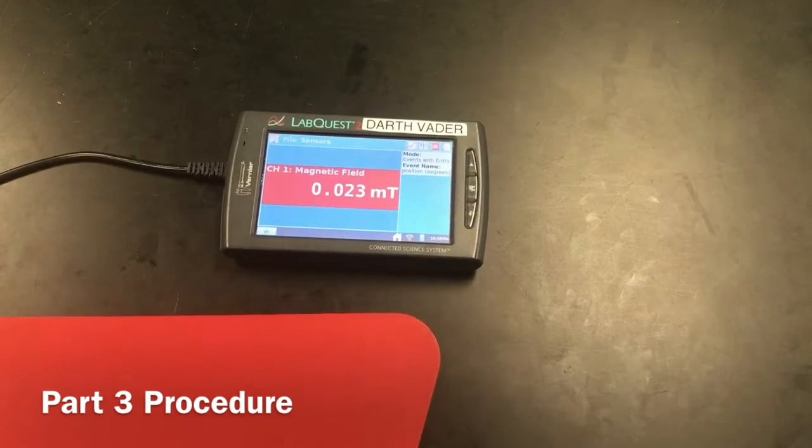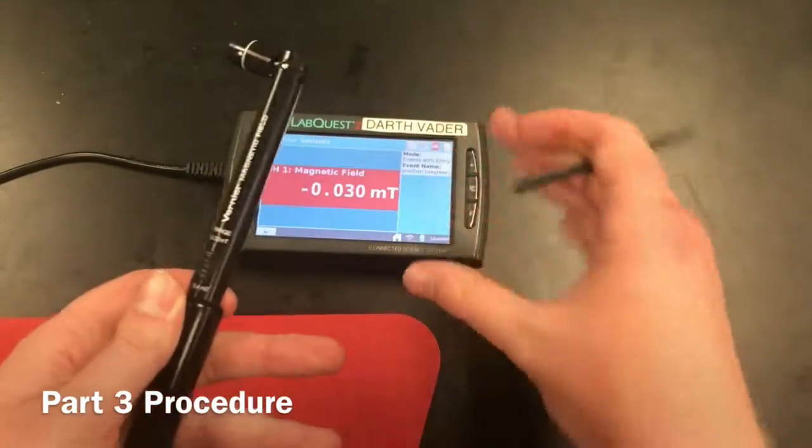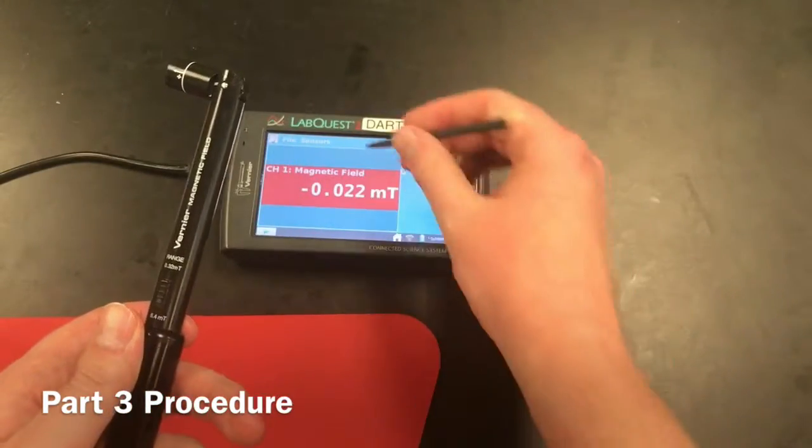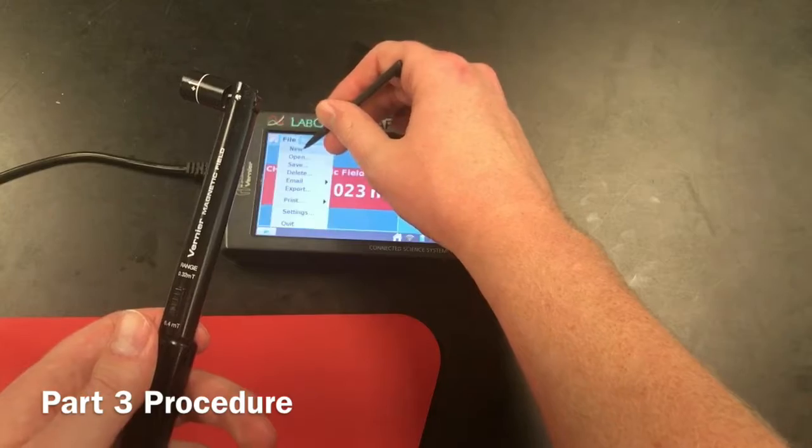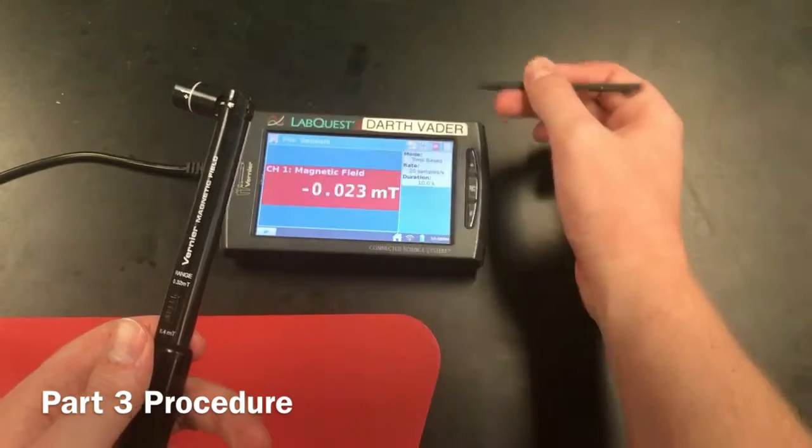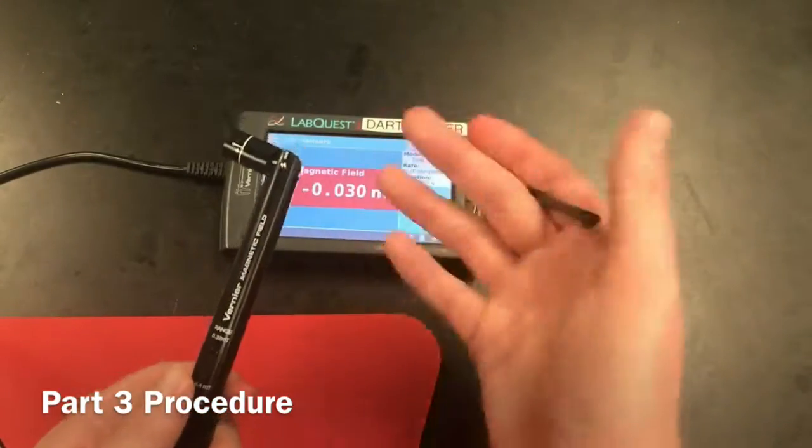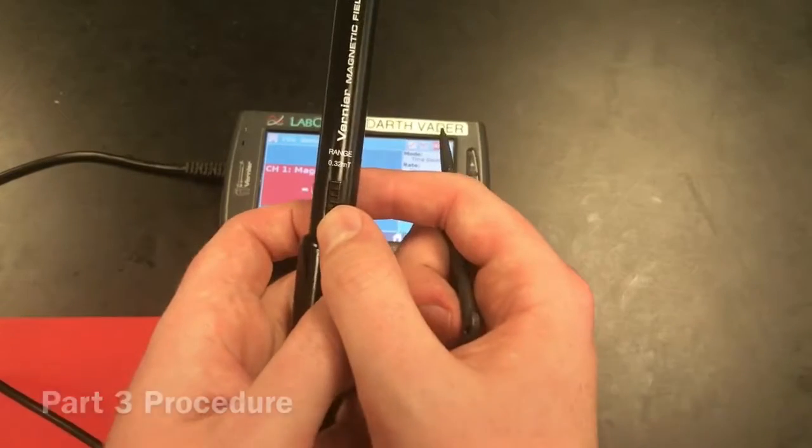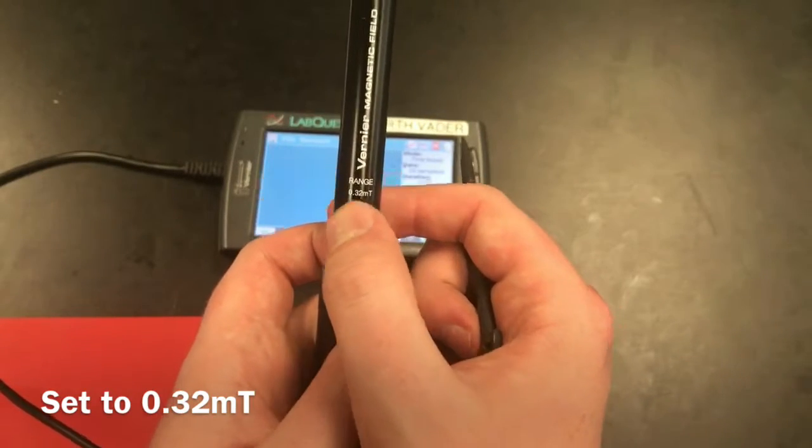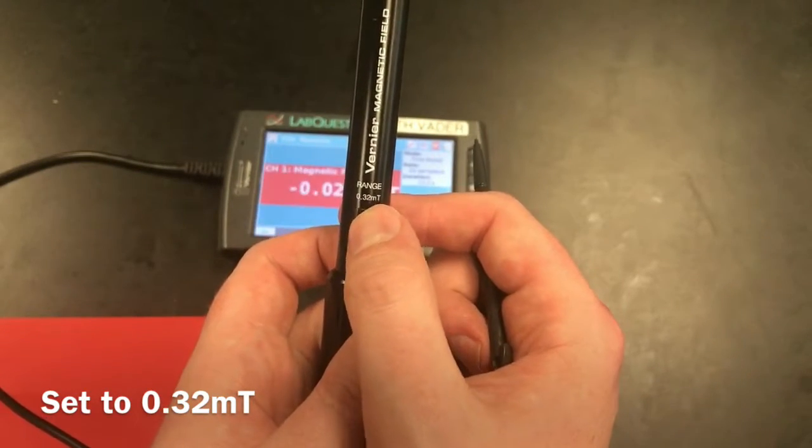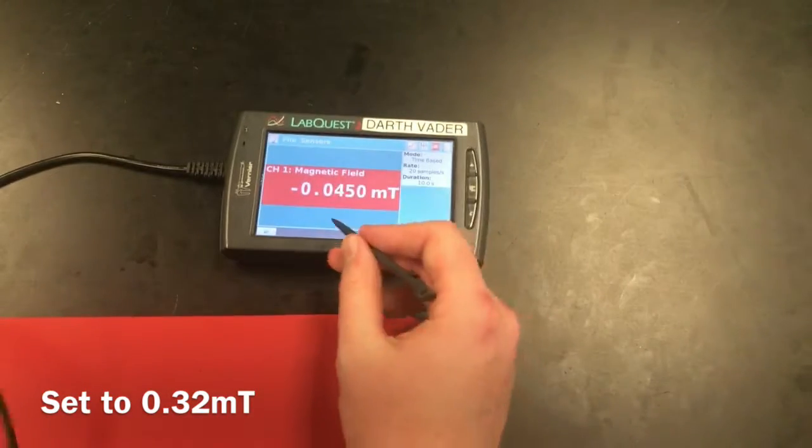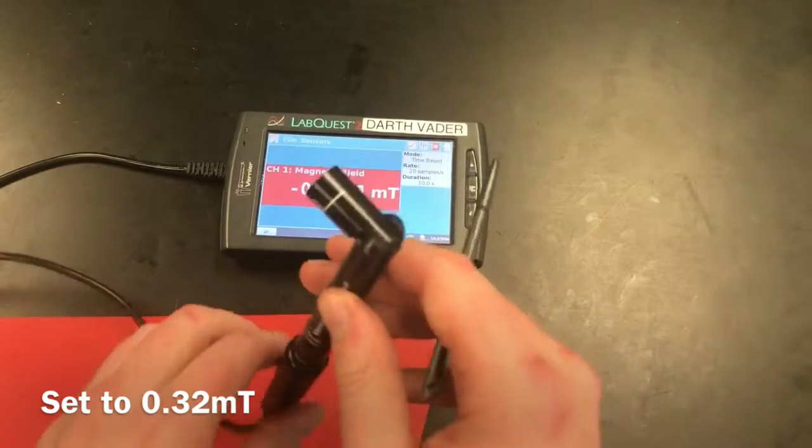For part three of the lab, we're going to use our magnetic probe and our LabQuest. I'm going to clear this out really quick so we have a new live reading. We're going to switch the... So make sure to set your probe to 0.32 for this experiment. The reason that we're doing that is because you'll get a more accurate reading at four decimal places.